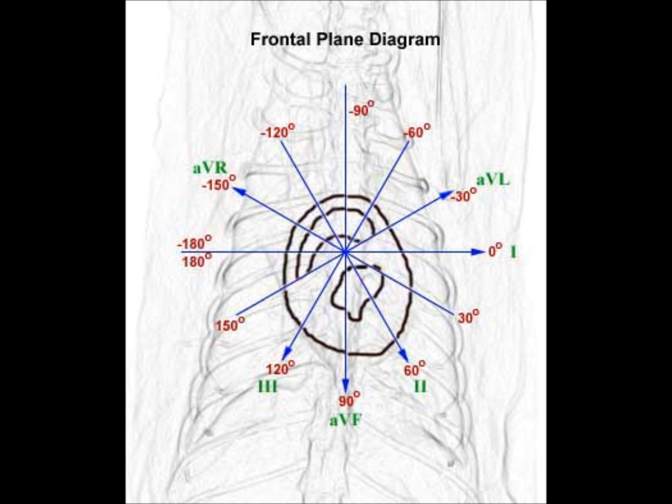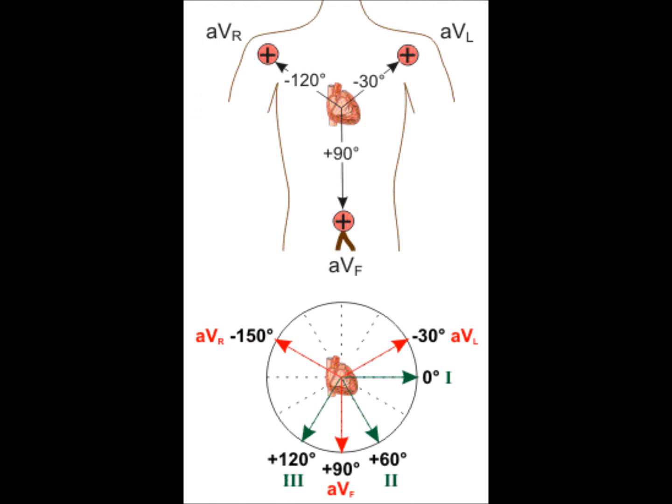Bipolar leads are ECG leads that have a positive and negative electrode. The electrode records differences in electrical potential between two selected electrodes. Leads 1, 2, and 3, these are the standard limb leads, also known as bipolar leads.